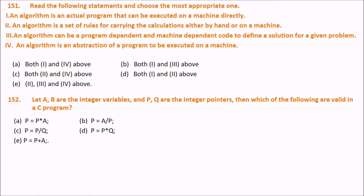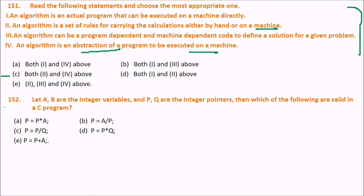Read the following statements and choose the most appropriate one about algorithms. The answer is C — specifically statements two and four: an algorithm is a set of rules for carrying out a calculation either by hand or by machine. It can be formal or informal, written as pseudocode or a flowchart. The fourth correct point is that an algorithm is an abstraction of a program to be executed on a machine.